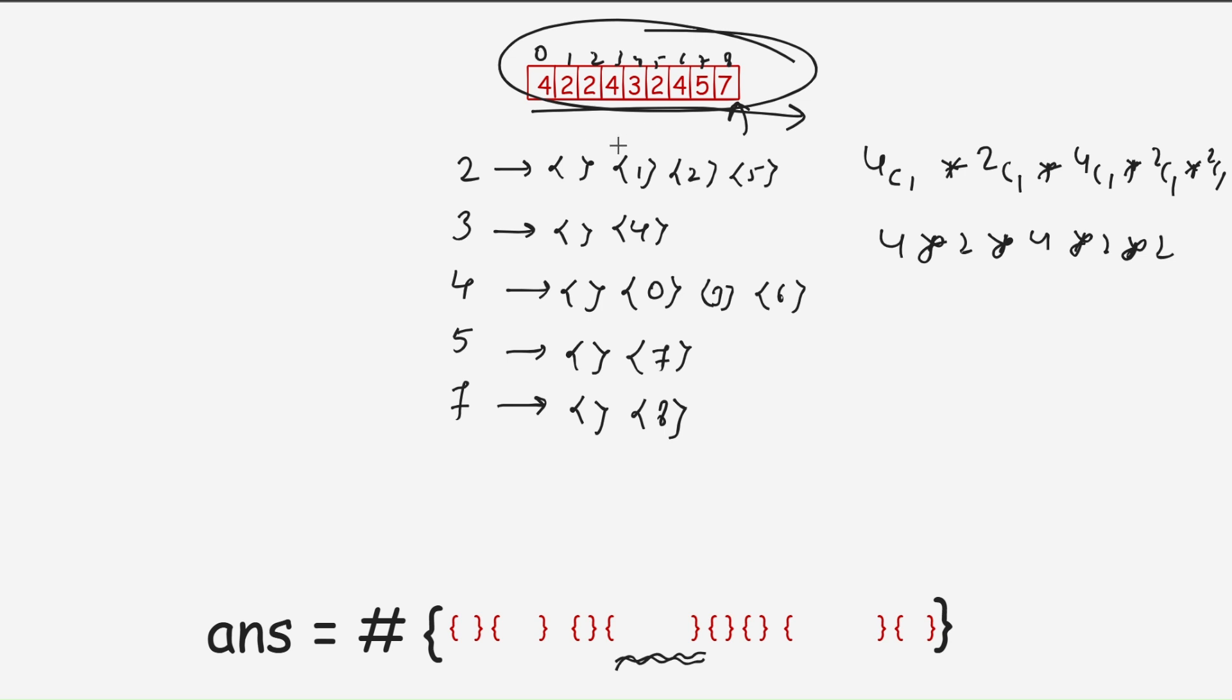Okay, so basically how we got this answer? Store frequency. Like 2 appears 3 times, 3 appears 1 time, 4 appears 3 times, 5 appears 1 time, 7 appears 1 time. And add plus 1 in each, multiply all of those and take modulo as answer would be large. So that is your answer.